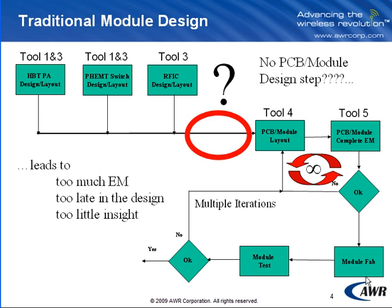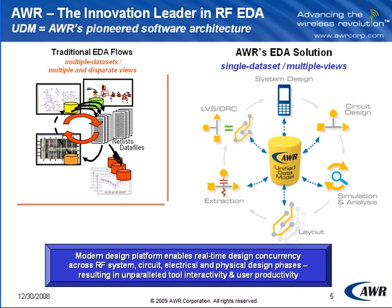What this leads to is an awful lot of EM trying to capture not only the performance of the structures we want to design on the module, but also the interaction among the die in their various interconnects and how they're connected on the module. In this traditional module design flow, we have too much EM too late in the design flow with too little insight into what's going on when we're actually building and designing the module. Ultimately, this leads to too many design iterations, poor performance, and somewhat reduced specification.